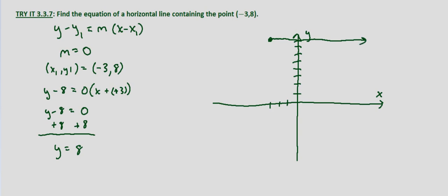If you recognize that we're given a point and we're told that it's horizontal, the equation for the line is always simply going to be y equals, in this case, y1 if we're looking at the point-slope form. Because since our slope is zero, what we have is y minus y1 equals zero times x minus x1, so this is going to be zero.